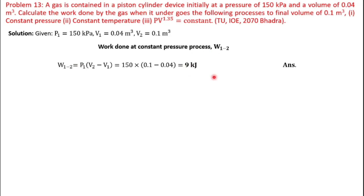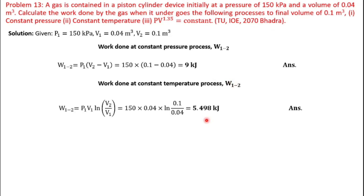Now, constant temperature process. Work done during constant temperature process W1: the formula is W1,2 = P1 * V1 * ln(V2 / V1). The values are known, so we can calculate how much work is done.